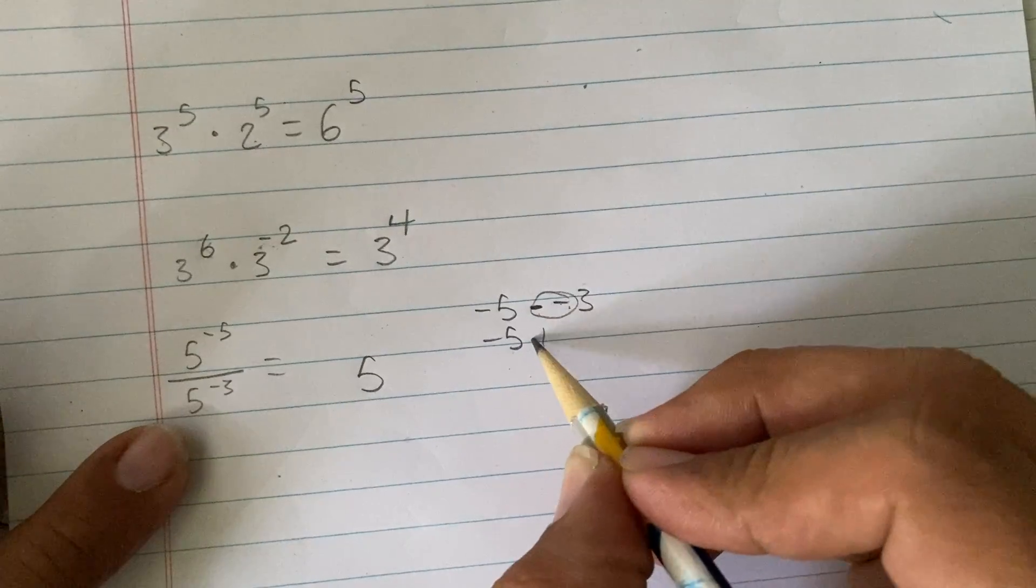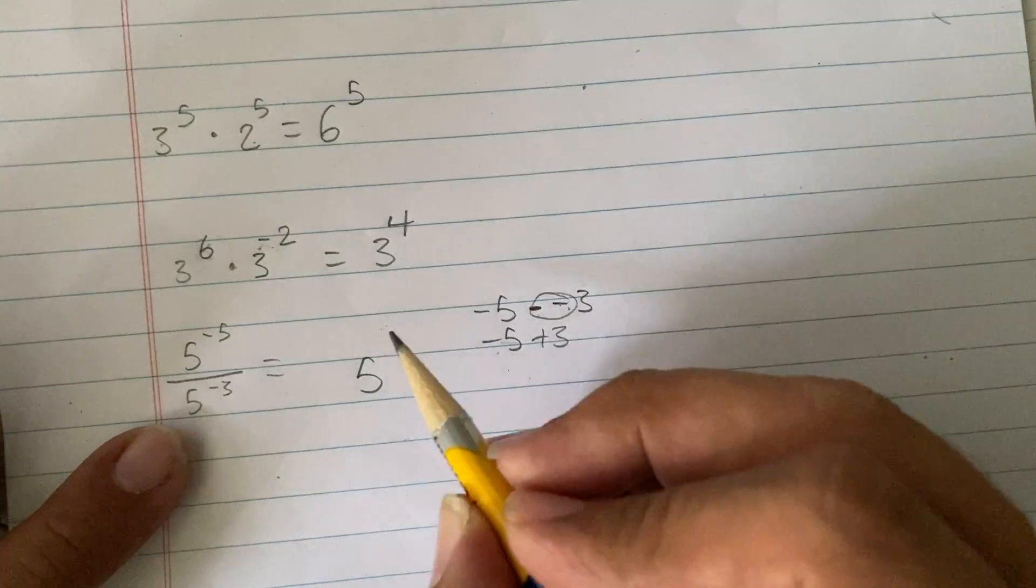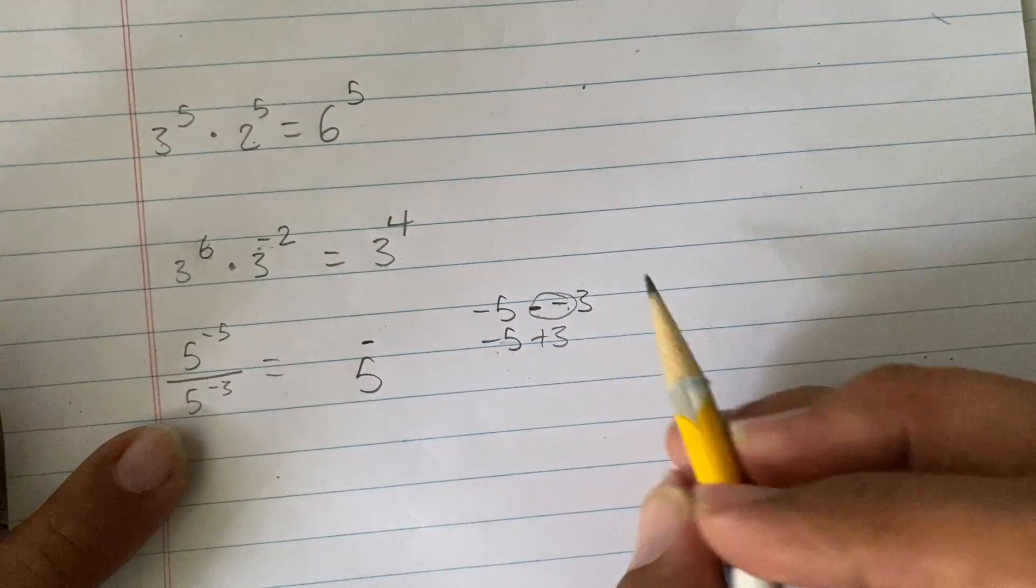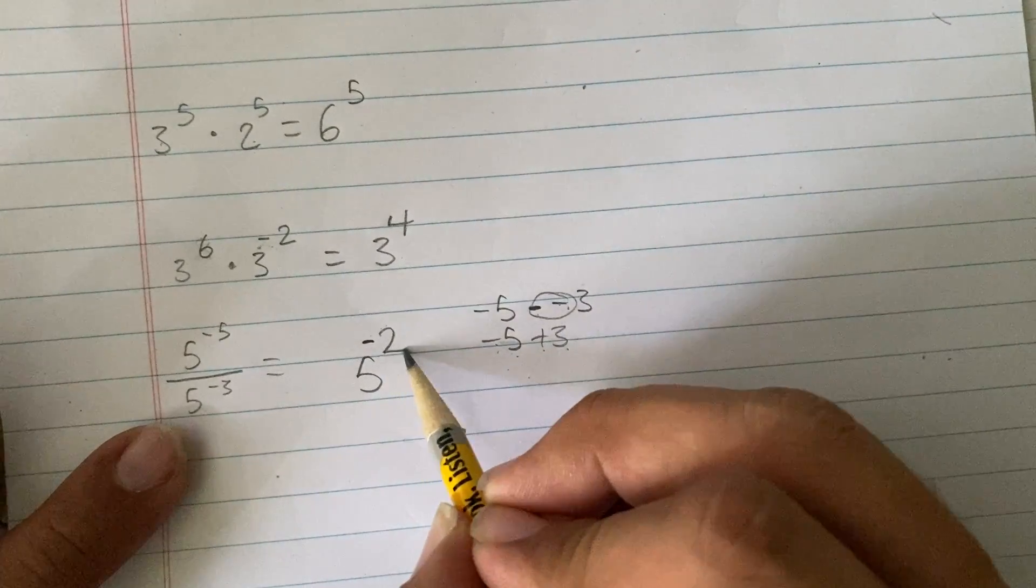So, negative 5 plus 3. The negative controls the sign, so I know the answer is going to be negative. And the signs are different, so these two numbers are going to subtract, making it 2.